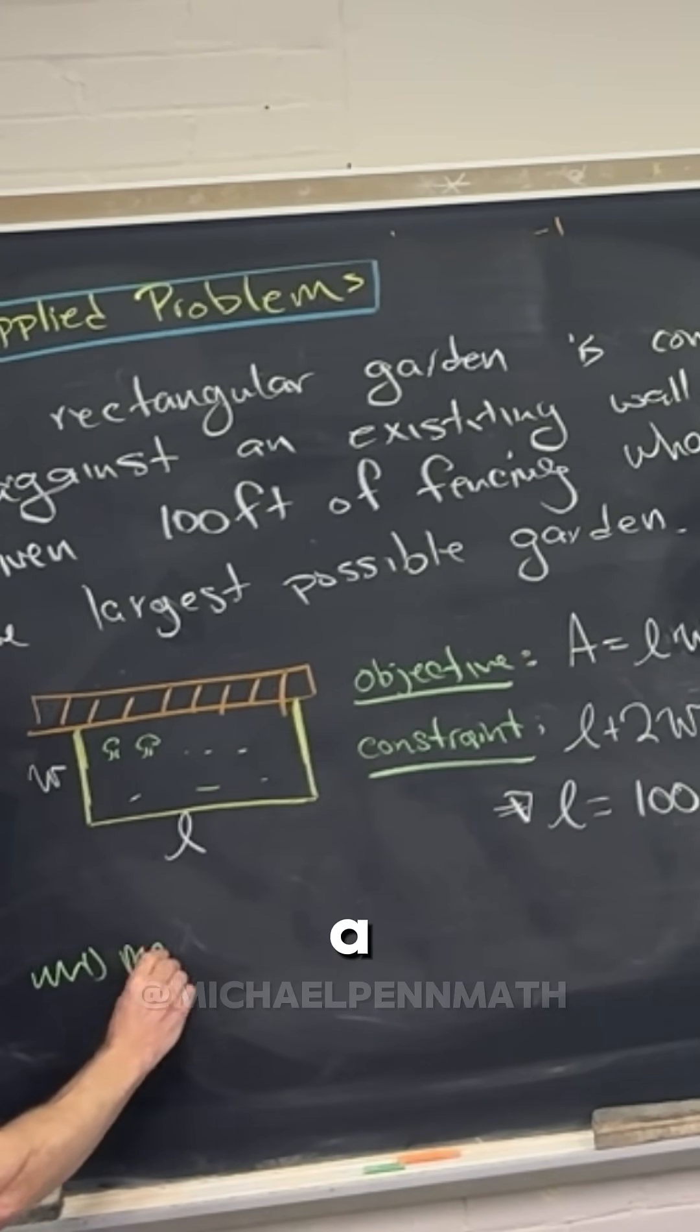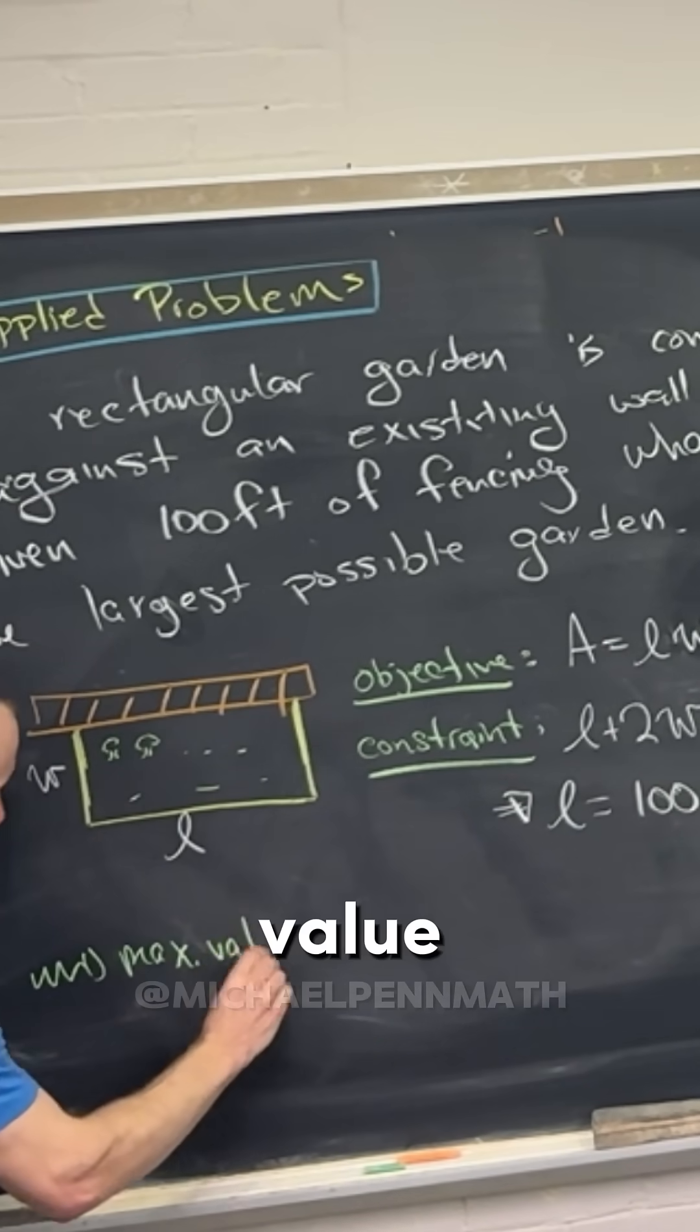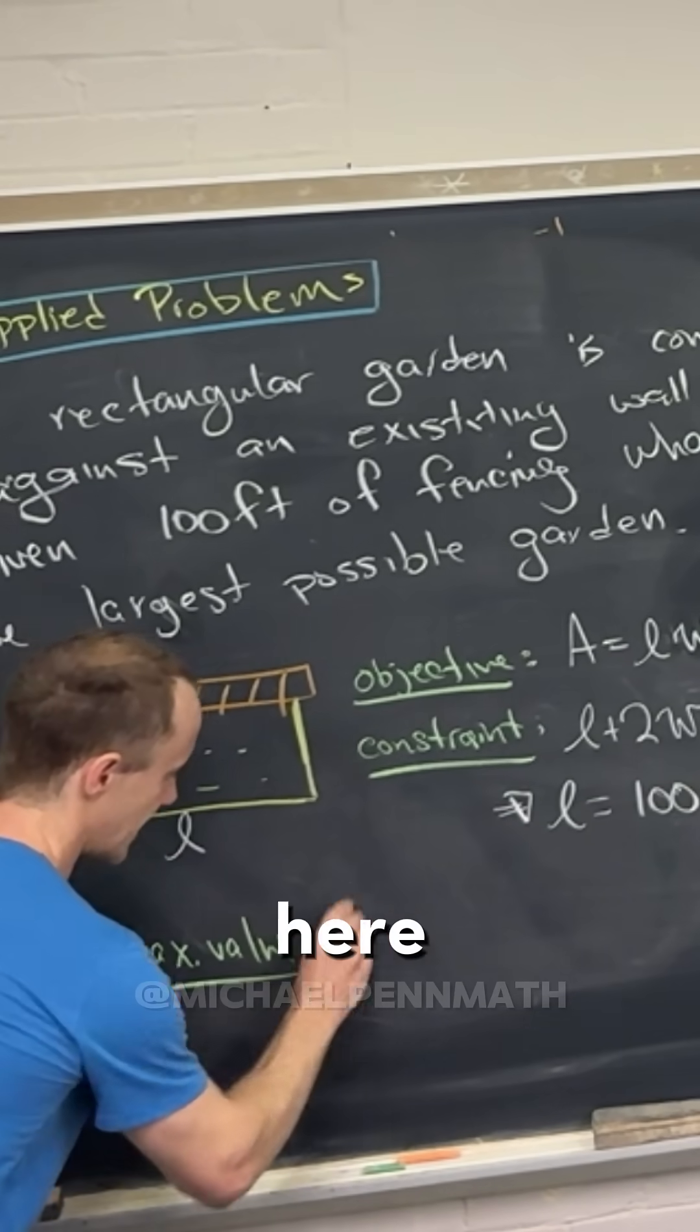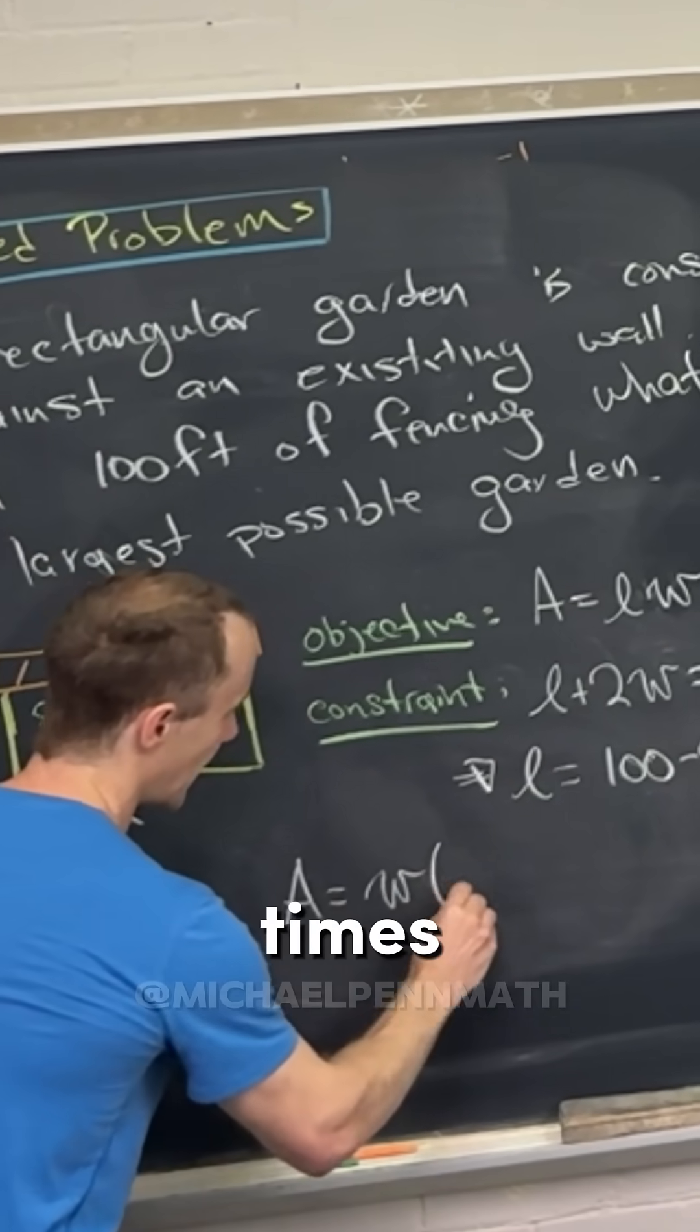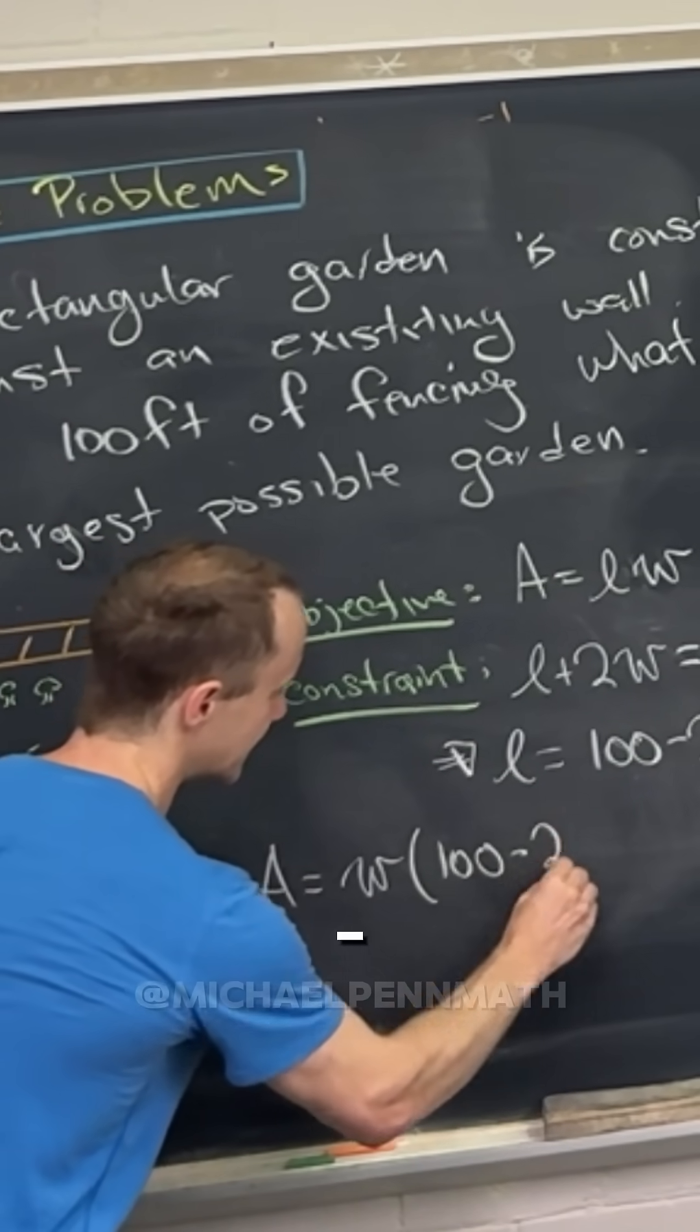...to wanting a maximum value of this equation, A, which is equal to W times (100 minus 2W).